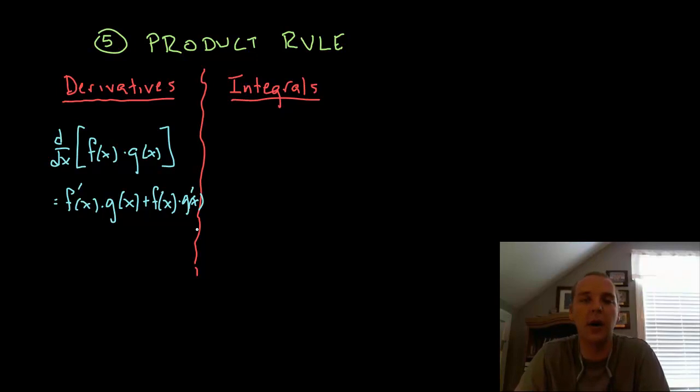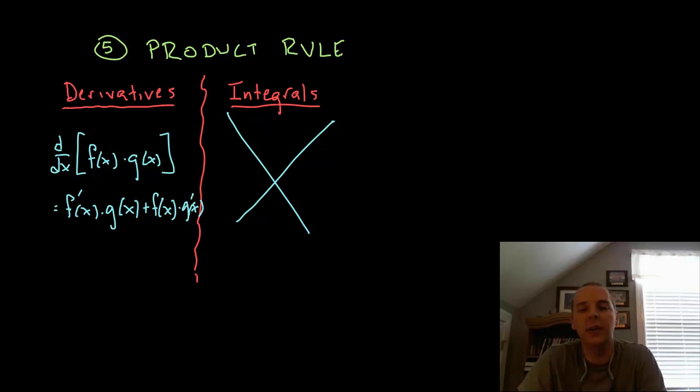Derivative of the first expression times the second expression plus the first expression times the derivative of the second expression. That was the product rule. You had to follow that pattern when you had a product of let's say x times sine x. You would have to follow that pattern here to correctly differentiate it. Bad news. Here comes the worst news of the video here.